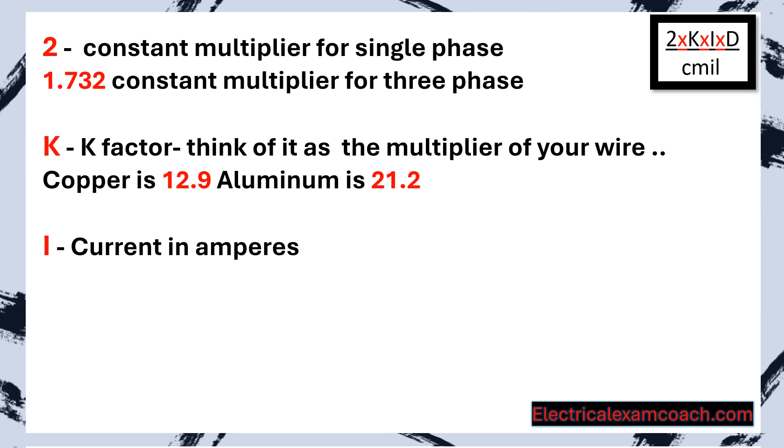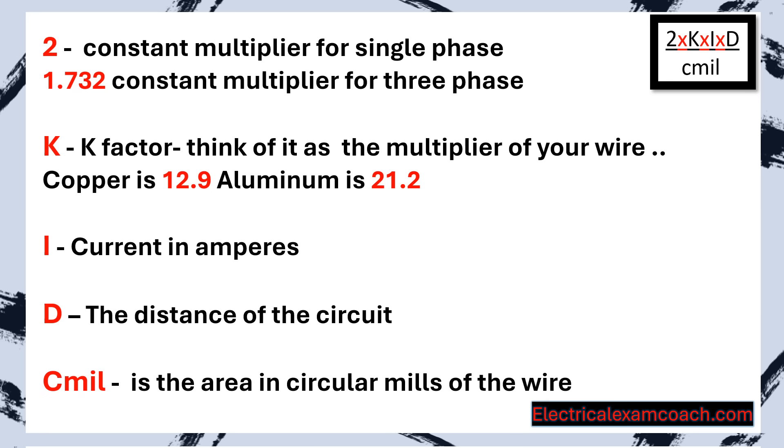I is your current in amperes and D is going to be your distance. You don't have to put it both ways - it's whatever distance the question says, you can plug it in one time. That's why I love this formula. And the cmils are going to be the circular mils of the wire, and we're going to teach you how to look up those.